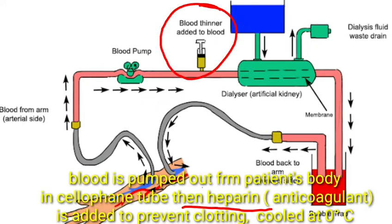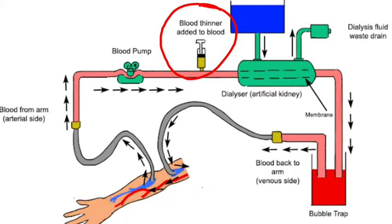Cool karne ke baad blood mein anti-coagulant add kiya jata hai — anti-coagulant substance ka naam hai heparin. Anti-coagulant isliye add kiya jata hai kyunki jab bhi blood bahar flow hota hai, thodi der baad clot ka formation hota hai — ise blood clotting kehte hain. Agar anti-coagulant add na kiya jaye, jaisa hi blood pump kiya jayega woh immediately clot bana lega aur woh blood useless ho jayega.